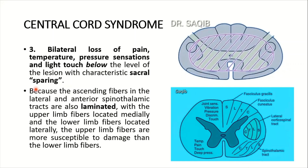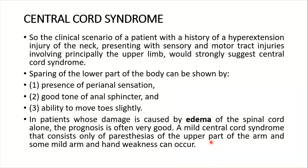Because ascending fibers in the lateral and anterior spinothalamic tracts are also laminated, with upper limb fibers located medially and lower limb fibers located laterally, the upper limb fibers are more susceptible to damage than the lower limb fibers. The cervical fibers for the spinothalamic tracts are located more medially, so they are the most vulnerable to damage first.